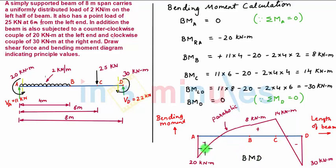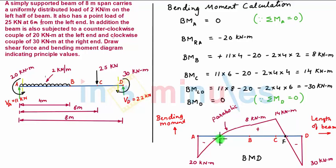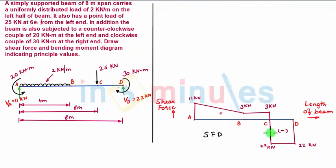Now let us analyze the bending moment diagram. The bending moment changes from negative to positive at a point — let this be E. Also, bending moment changes from positive to negative at another point — let this be F. Points E and F are called points of contra flexure. A point of contra flexure is a point at which the bending moment changes its sign.